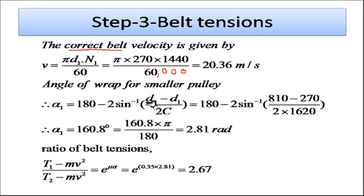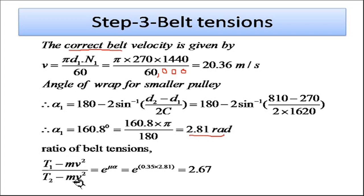The angle of wrap is given by: α = 180° − 2·sin⁻¹((d2 − d1) / 2C). Substituting d2 = 810, d1 = 270, and C = 1620: α = 180° − 2·sin⁻¹(540 / 3240), giving α = 2.81 radians. The ratio of belt tensions is (T1 − mV²) / (T2 − mV²) = e^(μα), and with μ = 0.35 and α = 2.81, this ratio equals 2.67.